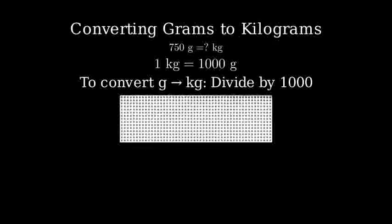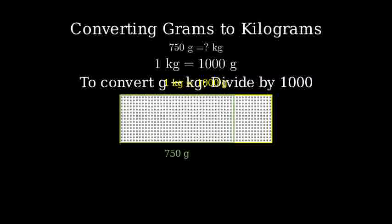Let's visualize this with blocks. Here we have 750 small blocks, each representing 1 gram. We can group these blocks into groups of 1000 to make kilograms. Since we have 750 blocks, that's less than one complete group of 1000.